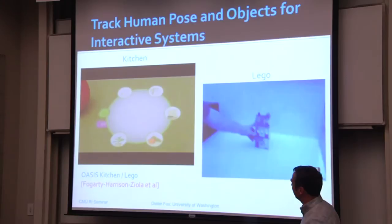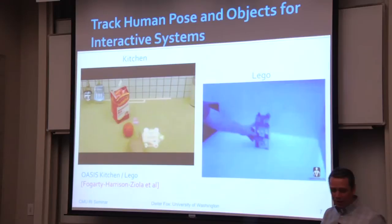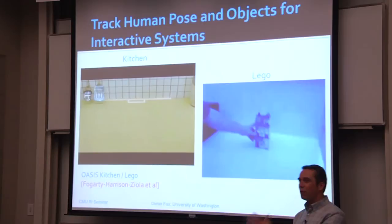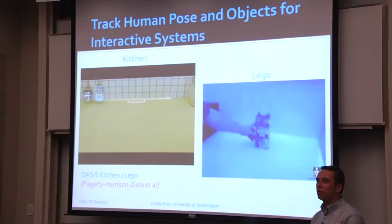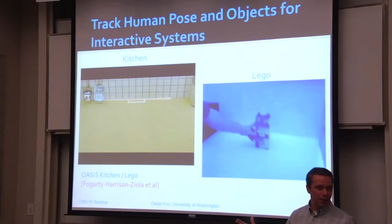Another interactive system we built is called Oasis Kitchen, where you have a kitchen counter with a depth camera looking down and a projector. If you can recognize the objects, you can create a virtual button interface in your kitchen. That was work done by James Fogarty, an HCI researcher from here. We want to turn this into a smart cooking assistant — if the system knows what you're trying to cook, it can track activities, guide you through the recipe, and remind you when to check on the meat in the oven.